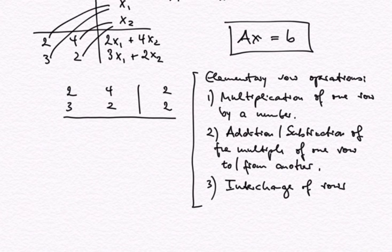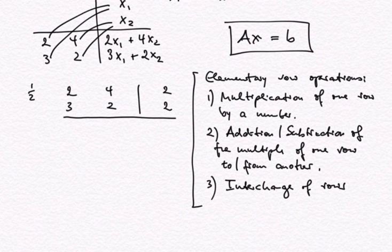The third elementary row operation is interchange of rows. These three operations are not going to change the solution space of our system. So let's go ahead: we multiply the first row by one half, and we get 1, 2, 1.